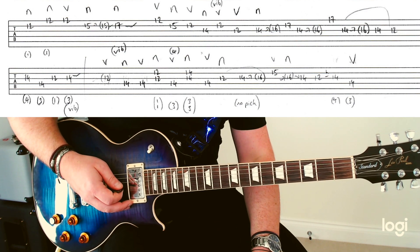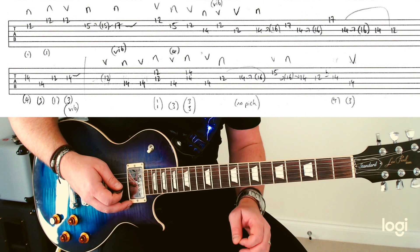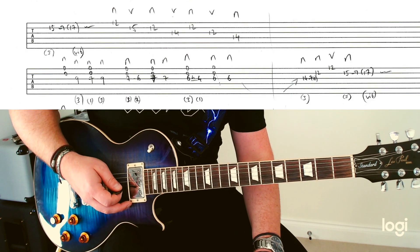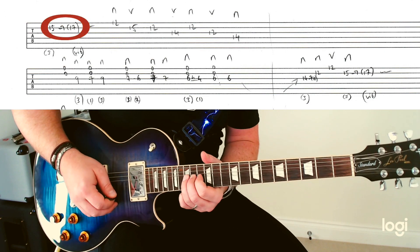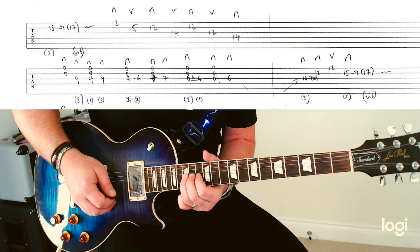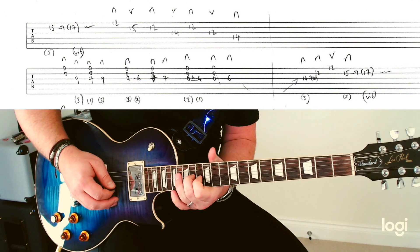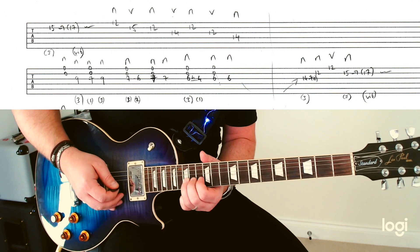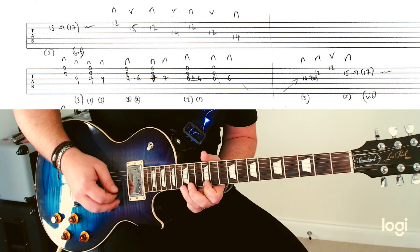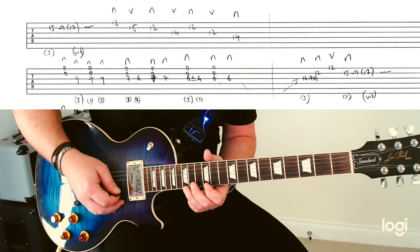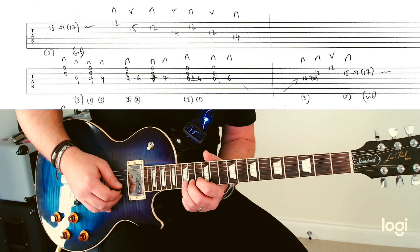So this is where the solo gets very interesting. We're on to page 2 of the tab now. And this phrase here—you bend up from the 15th to the 17th. Vibrato. Like that. Or you can do different picking variants, but sometimes it's nice just to do it alternate like that.